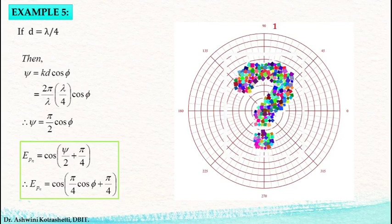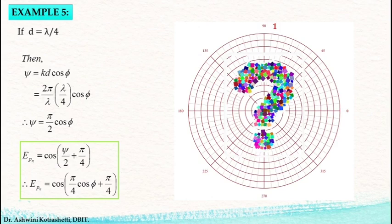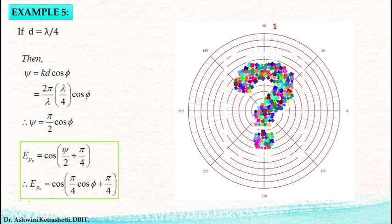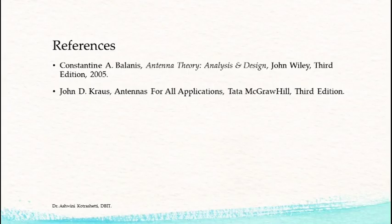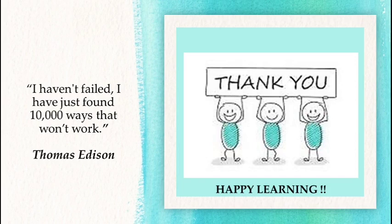With this we shall end Part 2 of the lecture series on antenna arrays. The learnings are kept short for maximum impact. In the next part we will discuss a few other excitation combinations and also n-element linear arrays. The reference materials used in preparation of these lectures are cited above. See you soon with Part 3 of the antenna array series — until then, take care and goodbye.